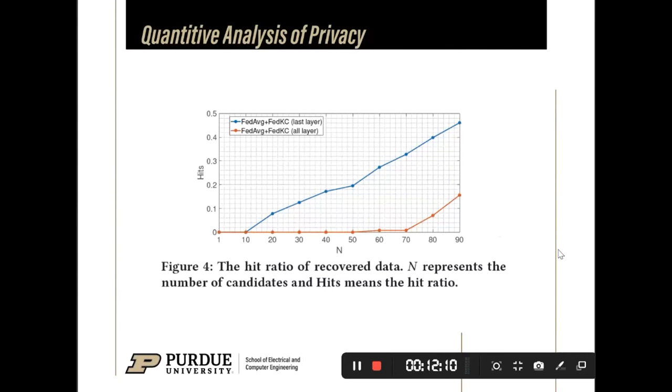Then, I will show the quantitative analysis of privacy. We try to recover raw text from the representation from FedKC. For each token, we choose top N possible candidates. Then, the proportion of tokens who have candidates contained in the raw data test is the hit ratio. According to Figure 4,